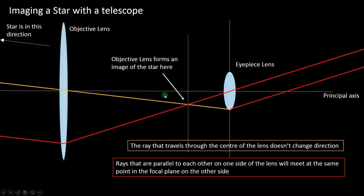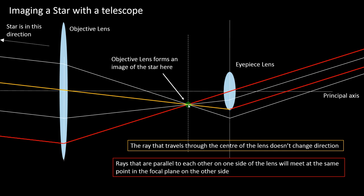What we've effectively done, just like with a single lens, is formed an image of the star at the focal plane, and then used the eyepiece lens to look at that image. The objective lens forms an image, and the eyepiece lens then magnifies it again. Any other rays drawn in will be parallel before the objective lens, pass through the same point in the focal plane, and emerge parallel after the eyepiece lens.